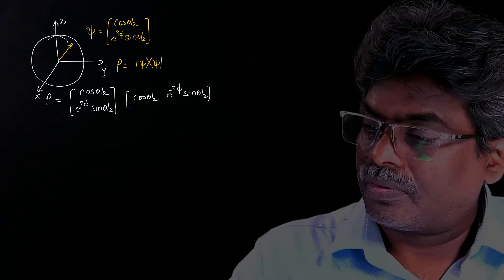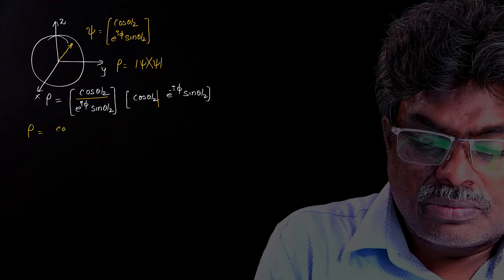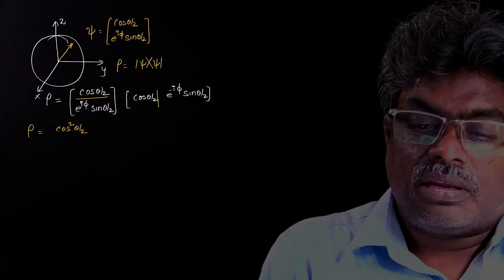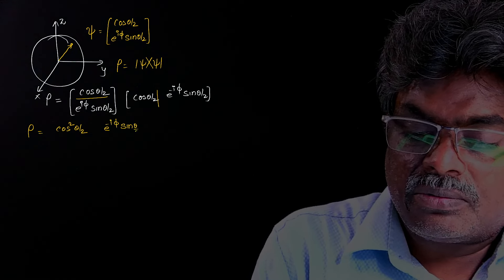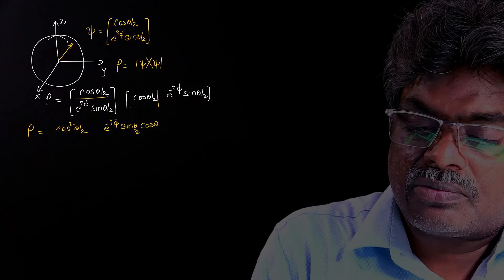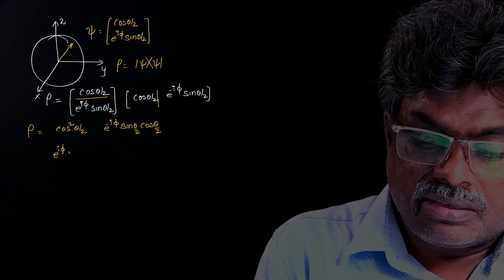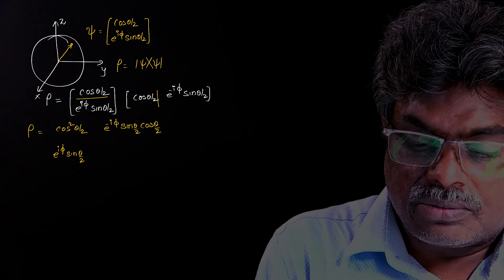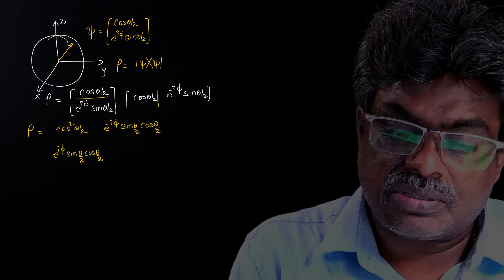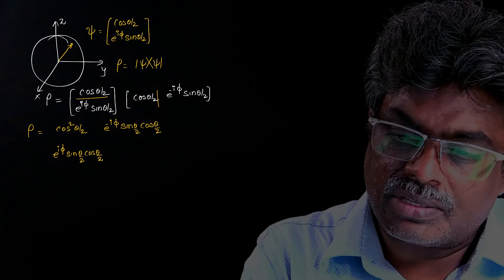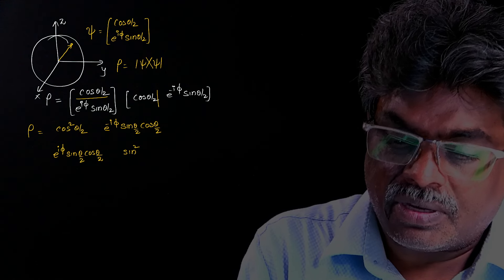Just multiply these. So multiplying the row and column, we get rho equal to: cos²(θ/2) in the first entry, then e raised to iφ times sin(θ/2) times cos(θ/2), then e raised to iφ sin(θ/2) cos(θ/2), and finally e raised to iφ times e raised to minus iφ cancels to 1, giving sin²(θ/2).